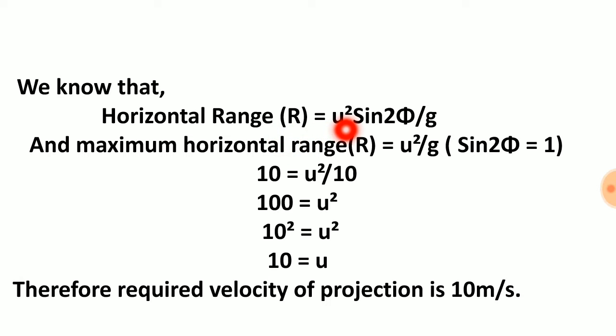R is equal to u squared sine 2θ divided by g. But it is asking about the maximum horizontal range. The horizontal range will be maximum if sine 2θ becomes one.